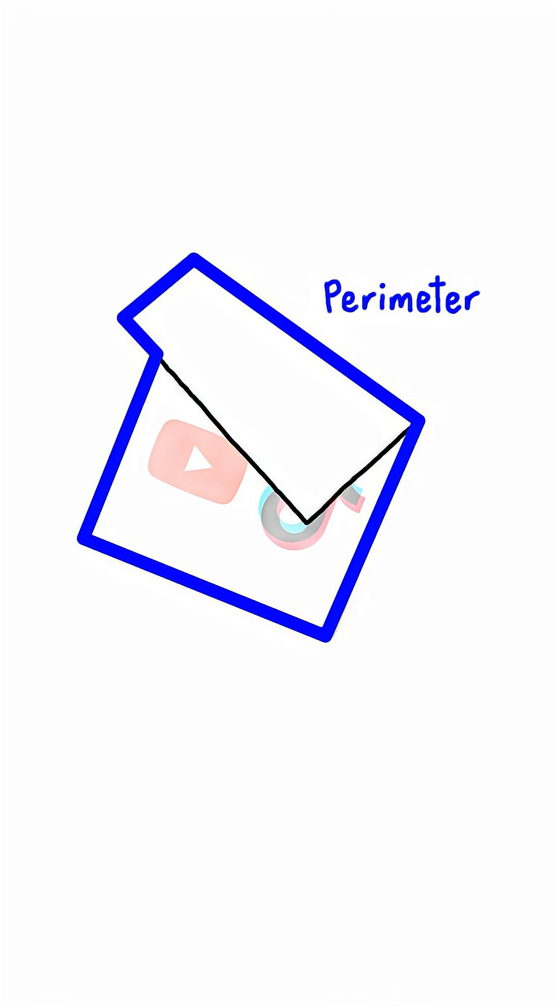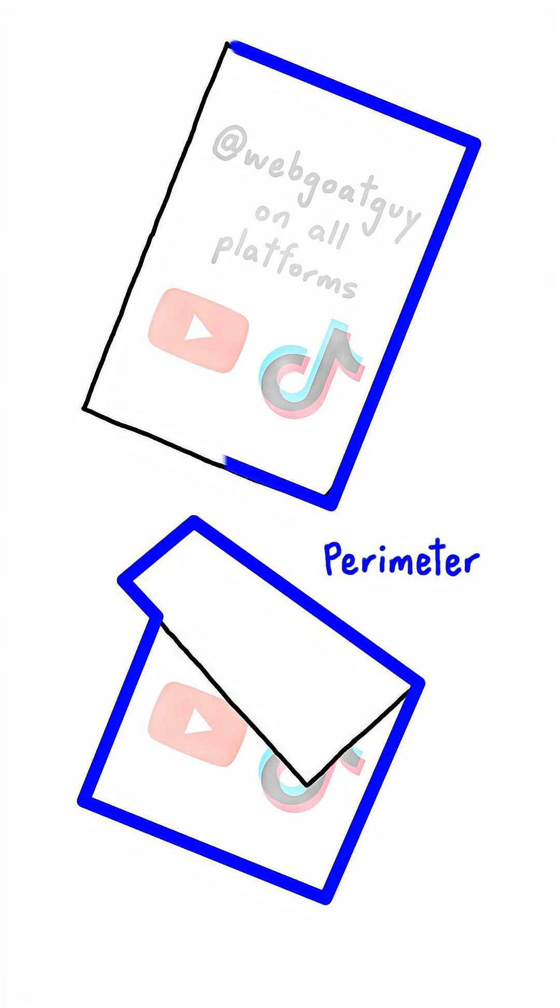First fact: folding a piece of paper always decreases its perimeter. As you can see, the unfolded paper has a longer outline than the folded one. This is true for paper of any shape, as long as you do a simple straight-line fold. None of those complex origami techniques.